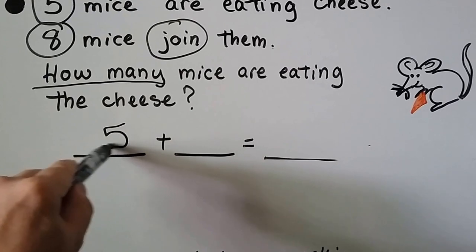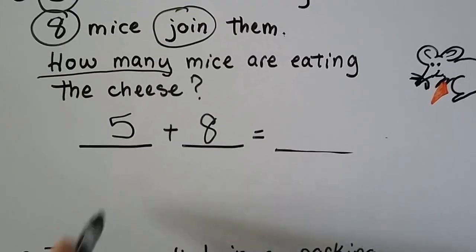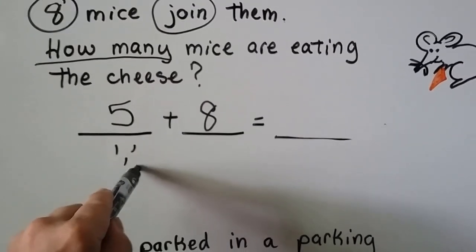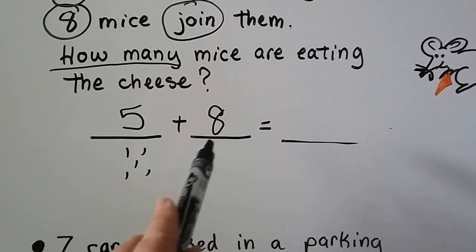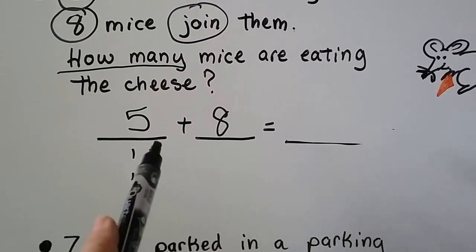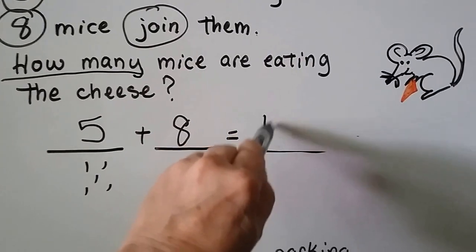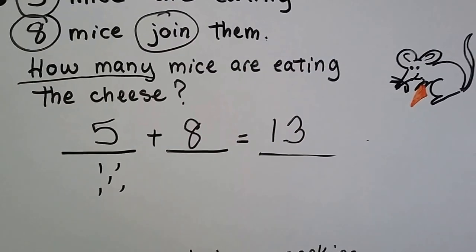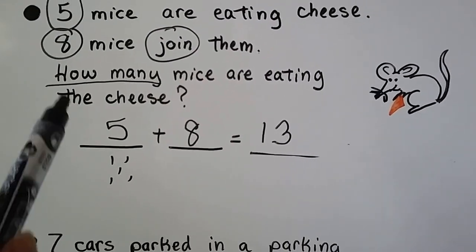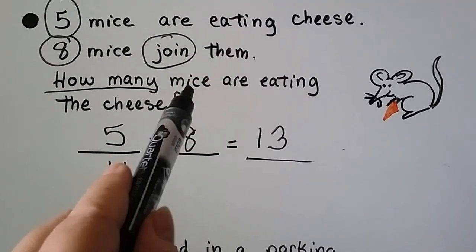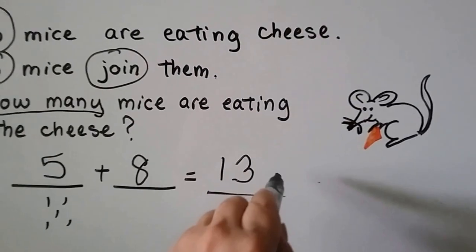So we have five plus eight. We can use counters or our fingers. We start at the eight and count on — eight, nine, ten, eleven, twelve, thirteen. We have to remember to label. We were looking for how many mice are eating the cheese, so we have thirteen mice.